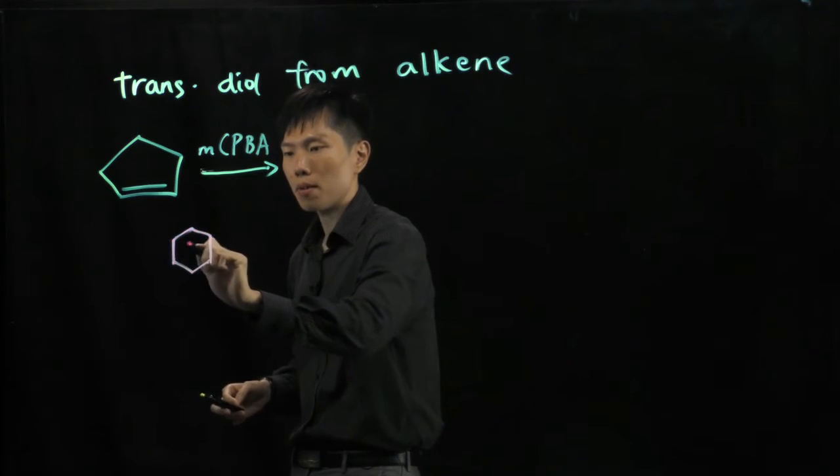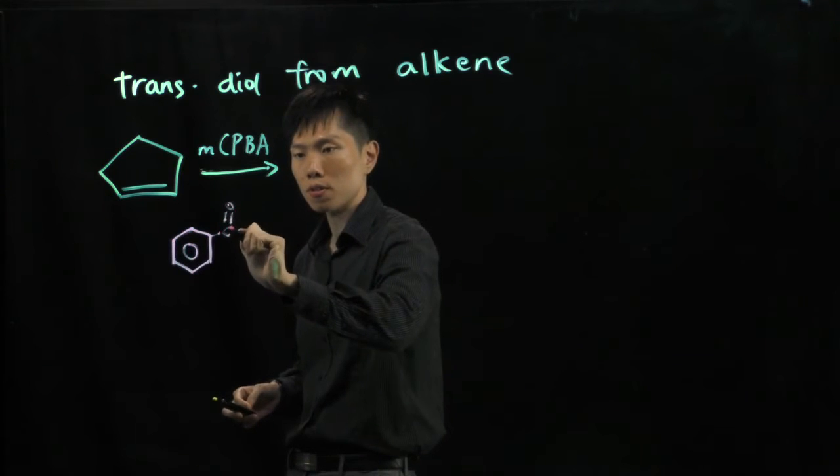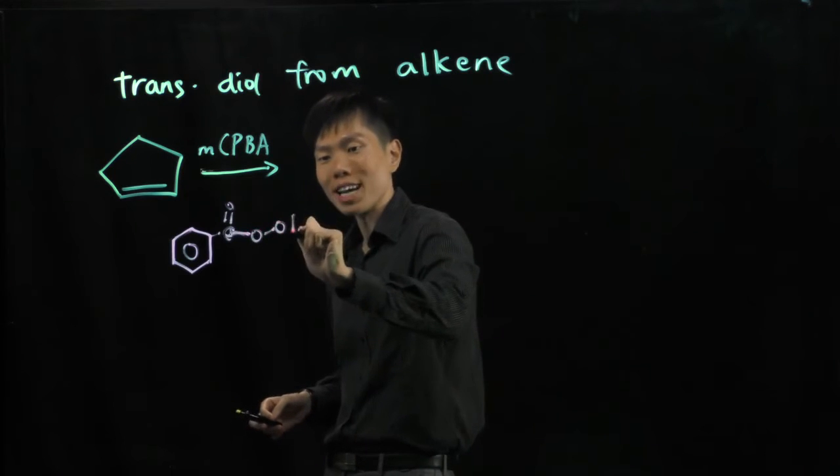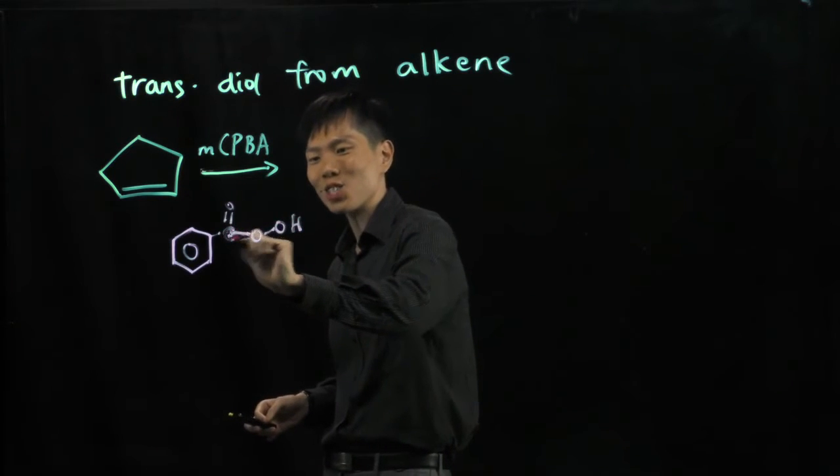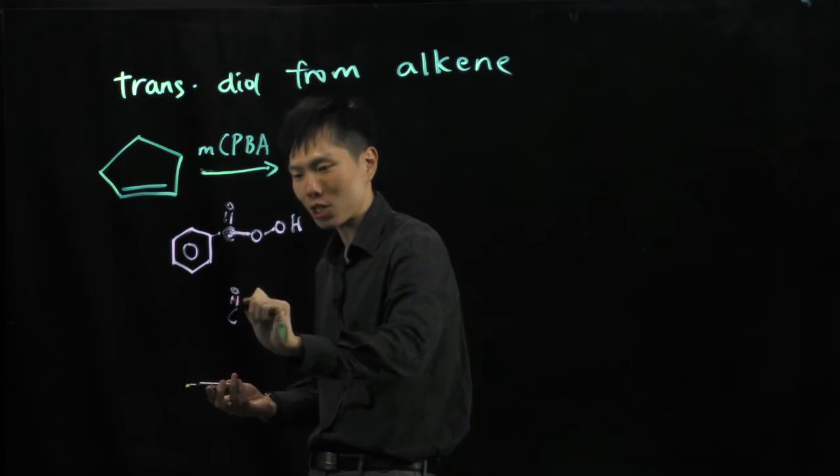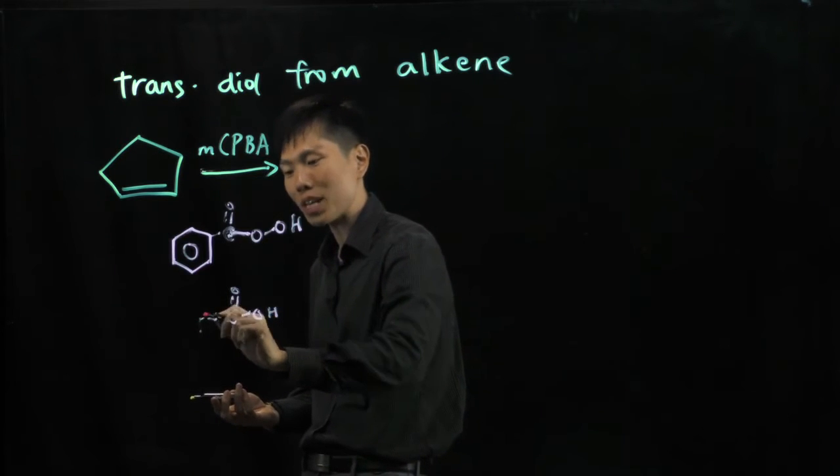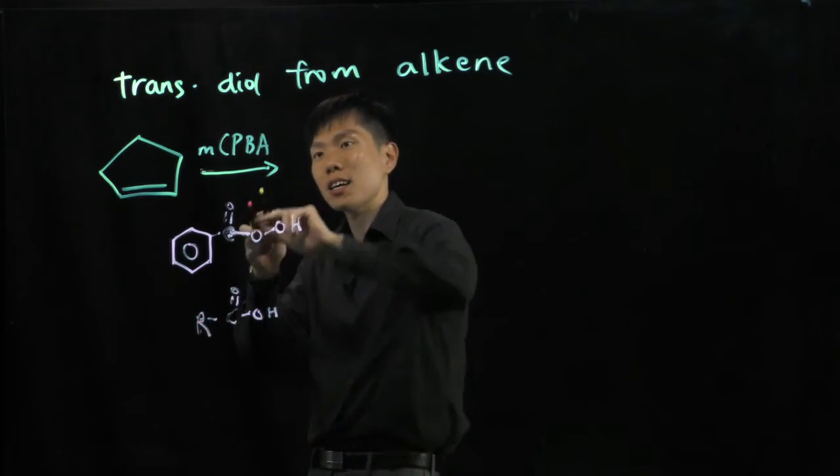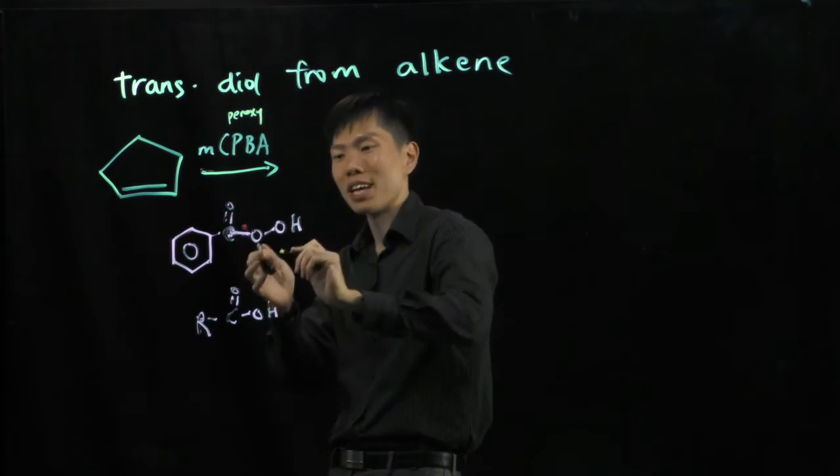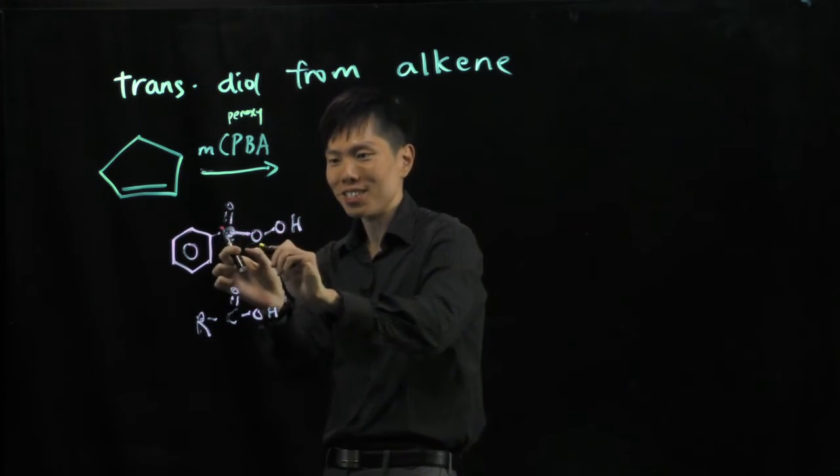So, it's a peroxybenzoic acid, so COOH. There is extra oxygen here. Normally for carboxylic acid we have COOH, right, this is the ordinary carboxylic acid. But in this case whenever you see peroxy, it means you have an extra oxygen between the COOH bond, the special one here.